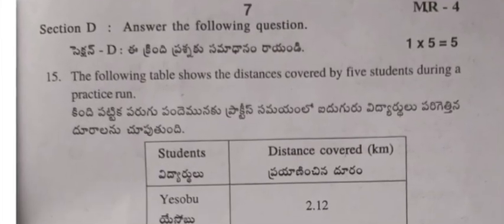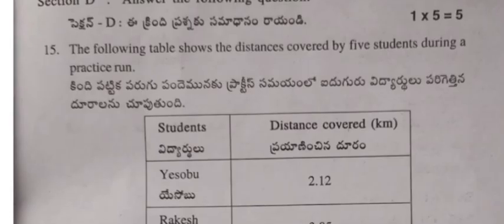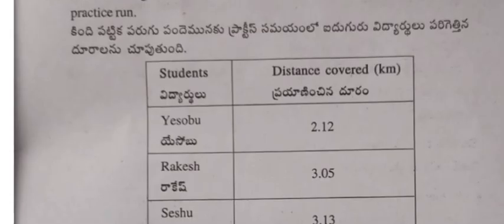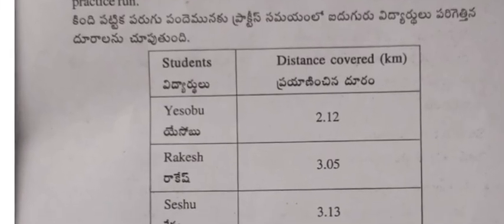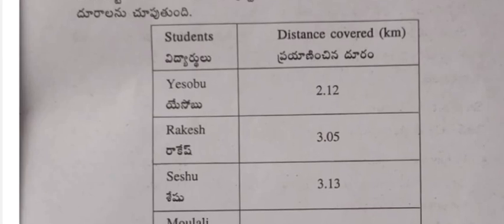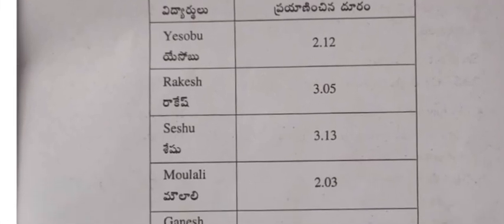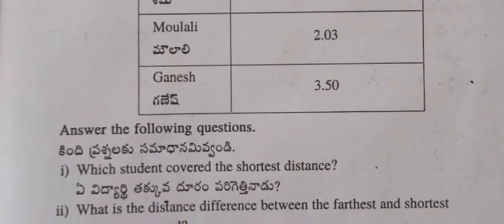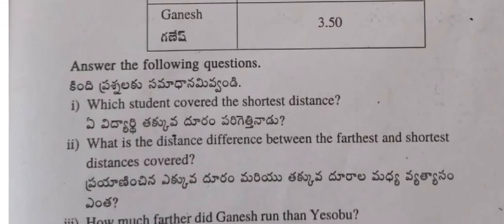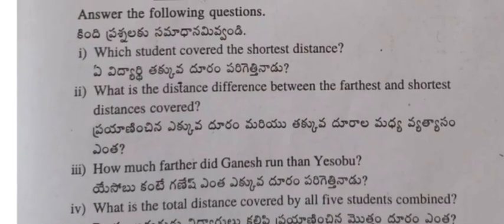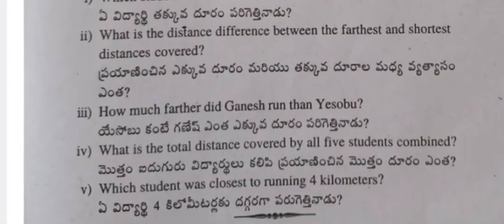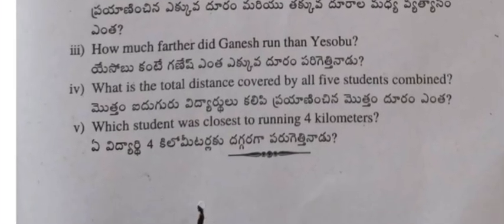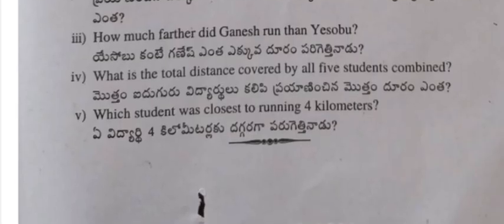Section D: Answer the following questions (1 × 5 = 5 marks). The following table shows the distance covered by five students during a practice run — Yasubu: 2.12 km, Rakesh: 3.05 km, Sheshu: 3.13 km, Maulali: 2.03 km, Ganesh: 3.50 km. (i) Which student covered the shortest distance? (ii) What is the distance between the farthest and shortest distances covered? (iii) How much further did Ganesh run compared to Yasubu? (iv) What is the total distance covered by all five students combined? (v) Which student was closest to running four kilometers?